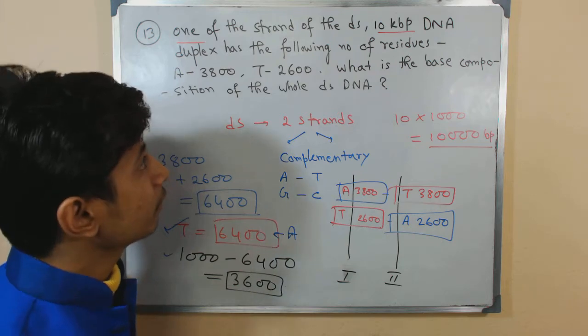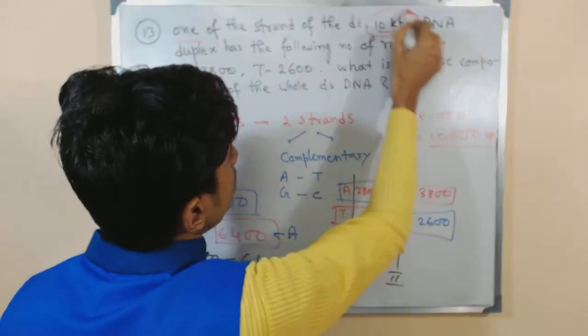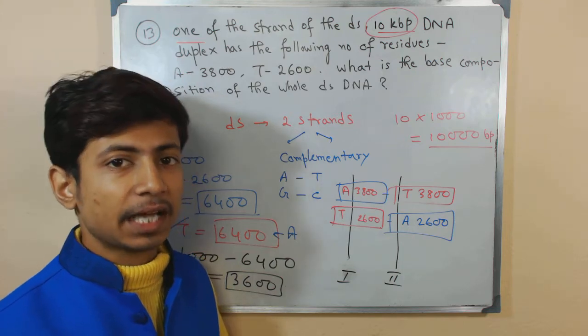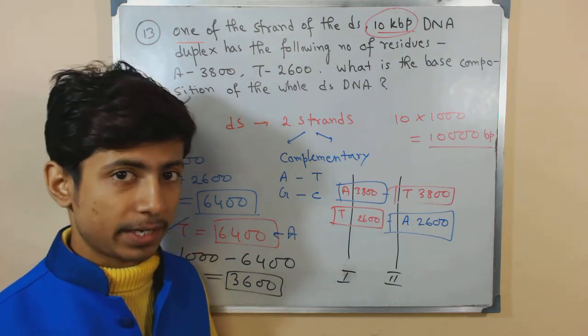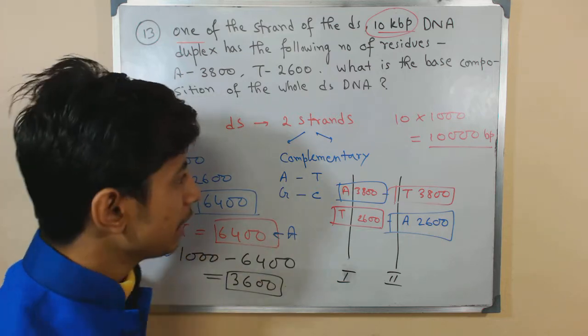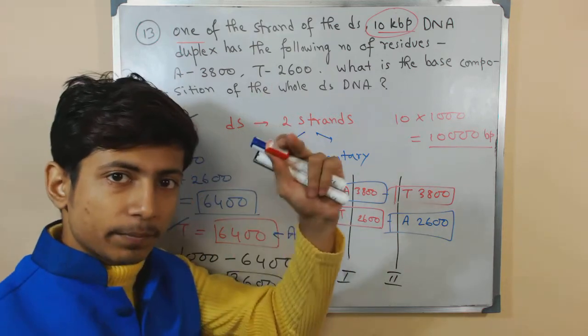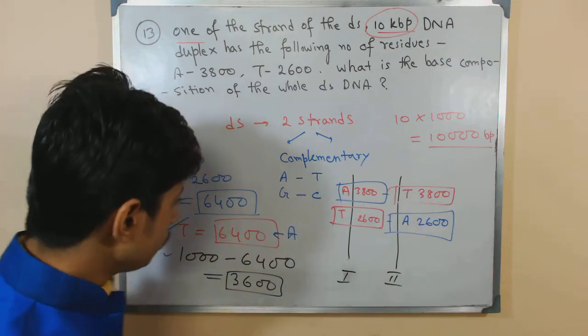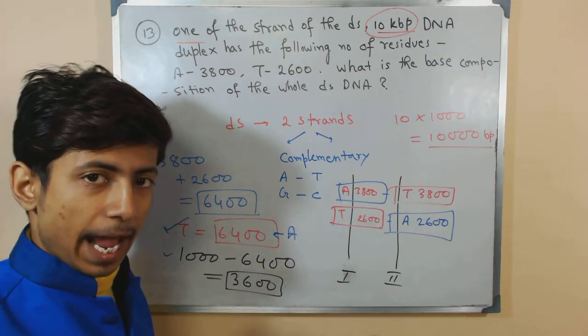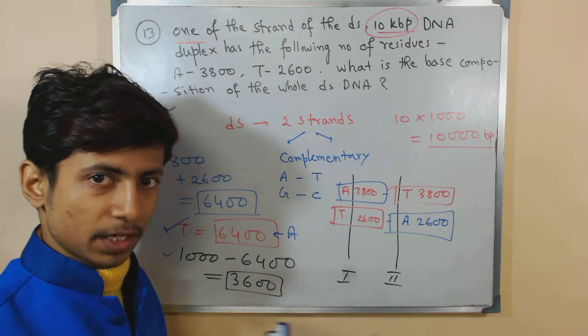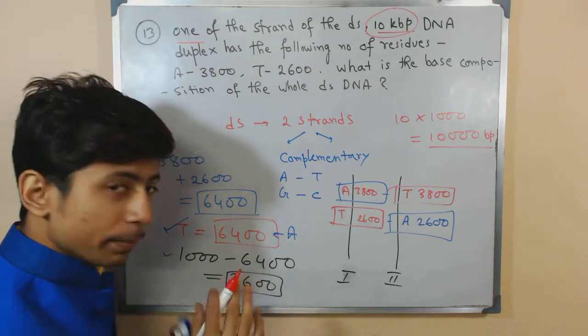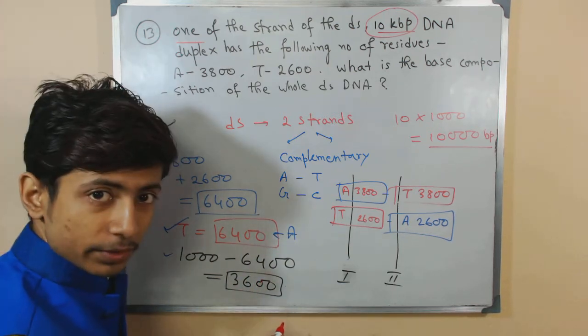We have 3600 remaining. Remember carefully: they told us the total number of base pairs is 10 kbp, meaning 10,000 base pairs in the duplex. We got 6400 from adenine and thymine, because the number of adenine and thymine will be the same in DNA.